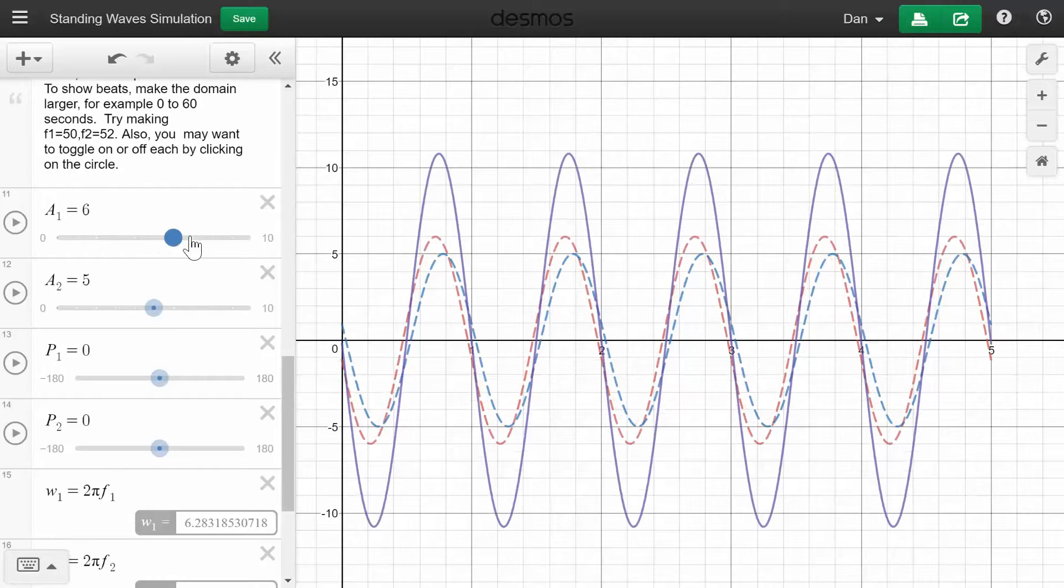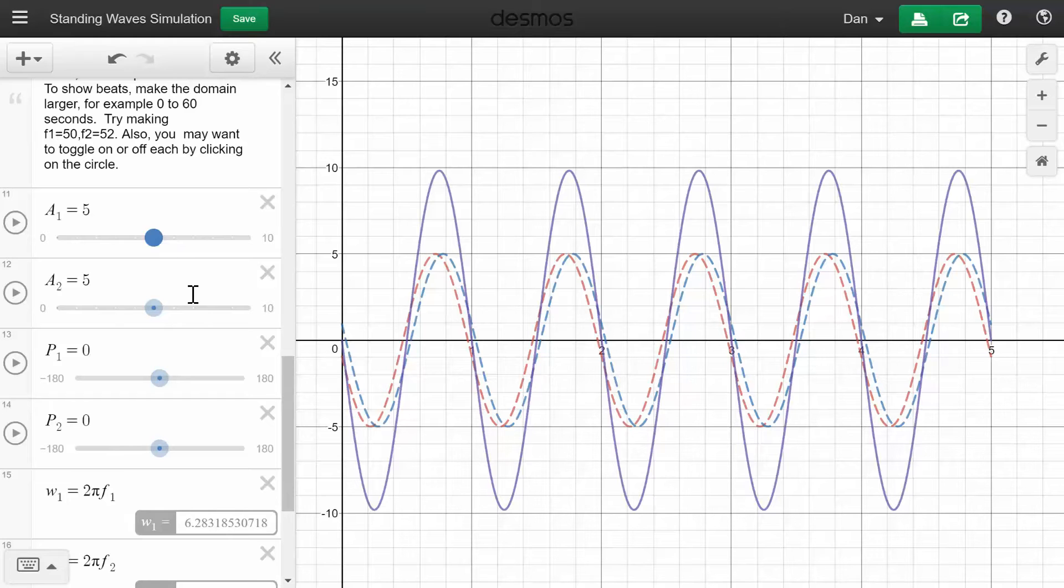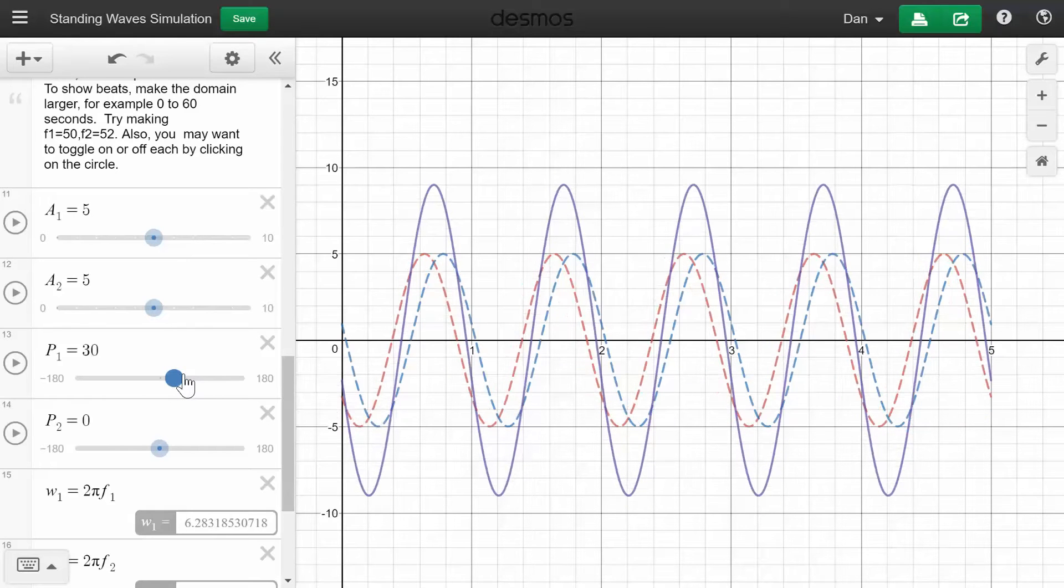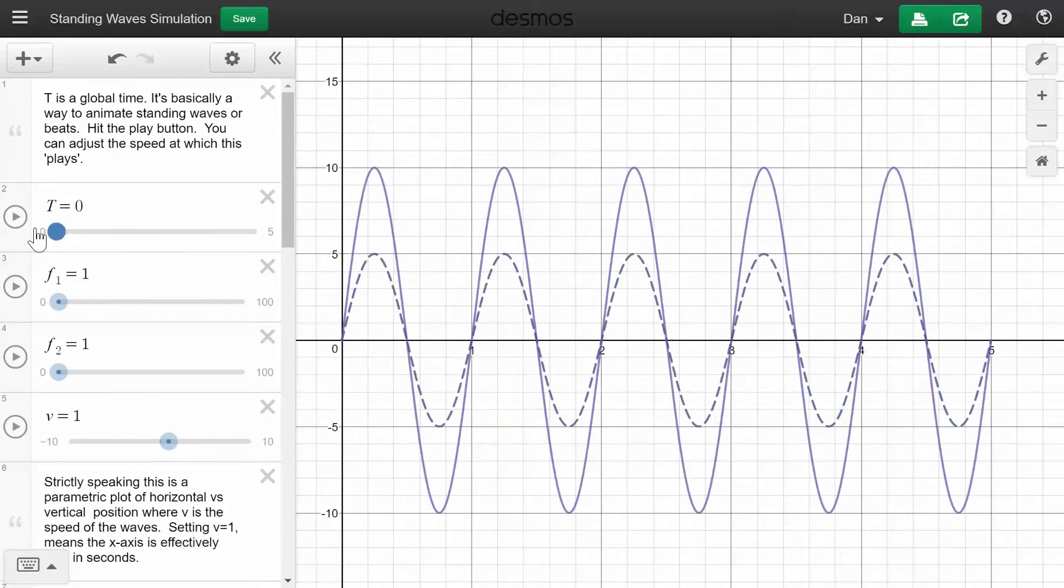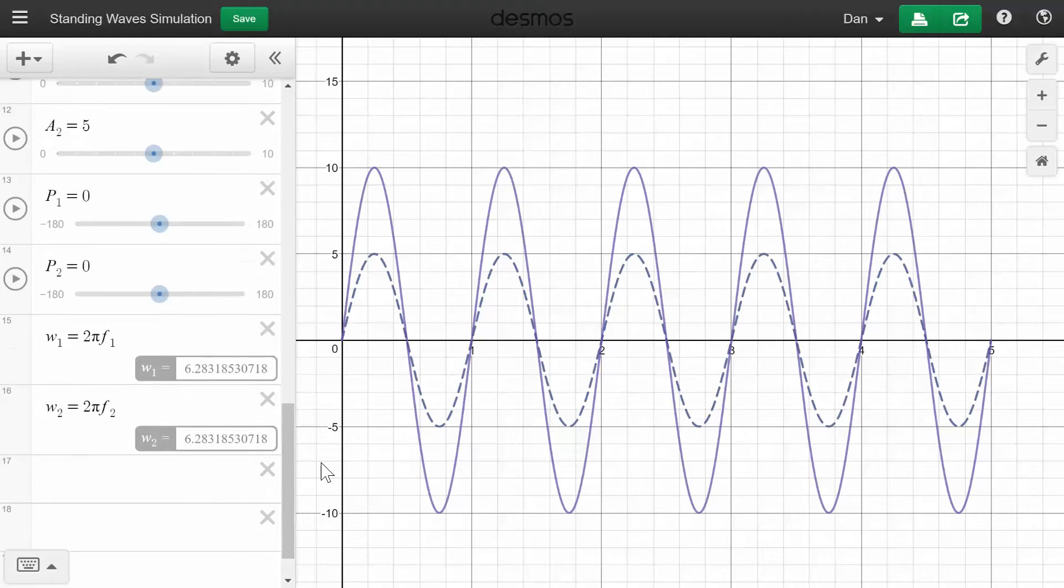You can change parameters like the amplitudes. This is just a phase shift at time zero. I'll probably leave that at zero. Set it back to time zero. So I like to input the frequencies instead of the angular velocities. And then I have Desmos compute the angular velocity from that.